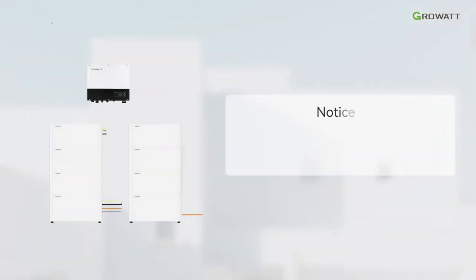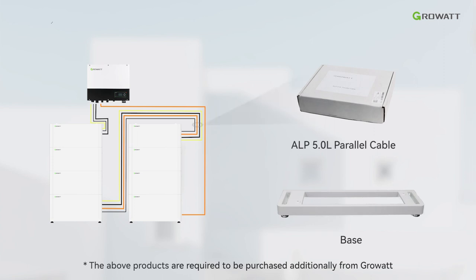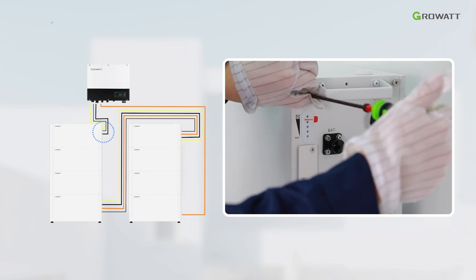If the installation site has more than five pieces of battery module, GrowWatt suggests installing ALP battery in two lines. The ALP 5.0L parallel cable accessory and another ALP battery base is required. Please follow the diagram to connect the battery system in parallel scenarios.